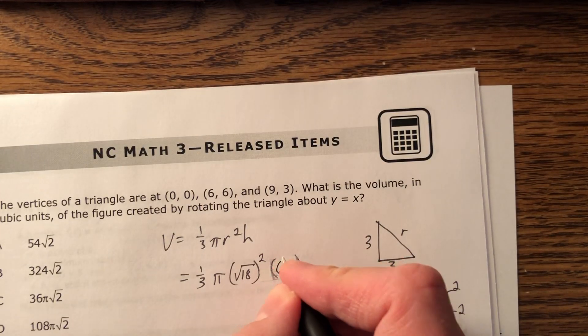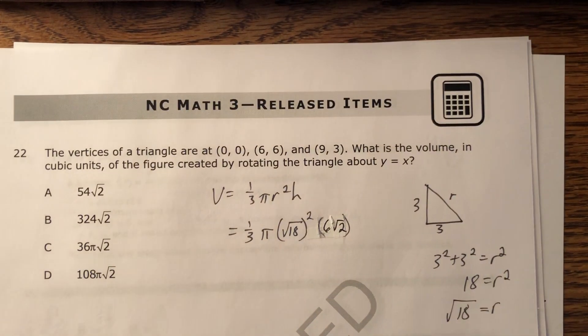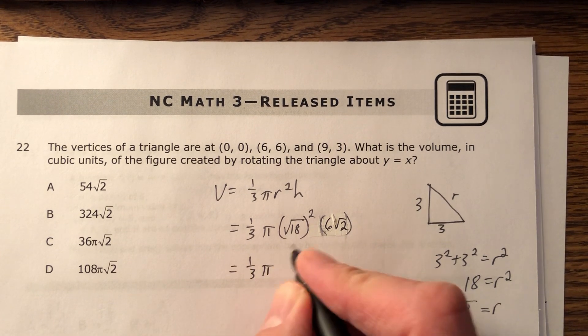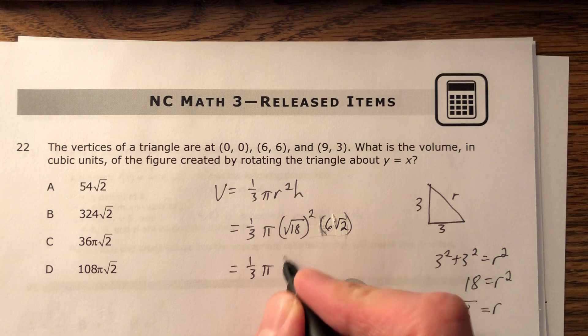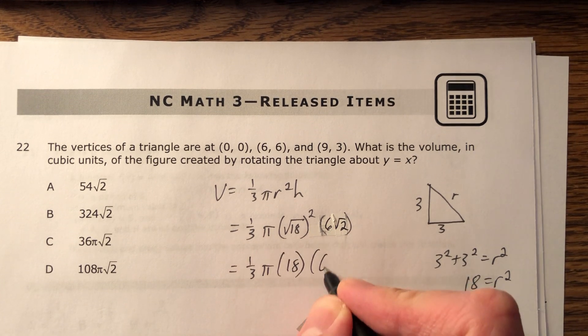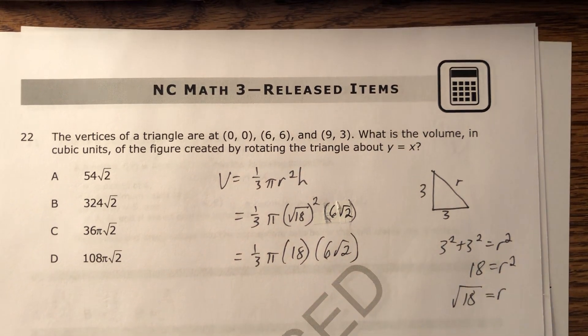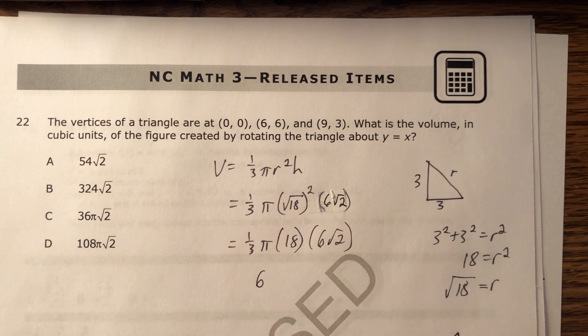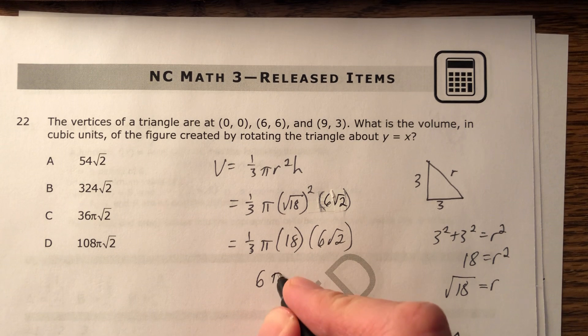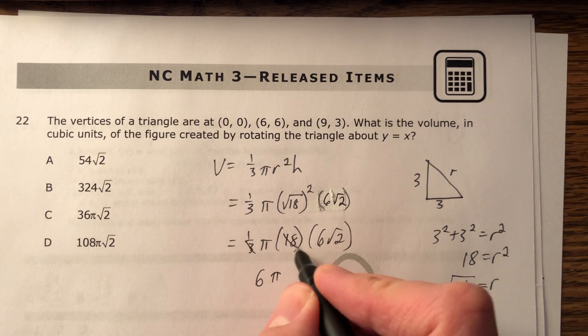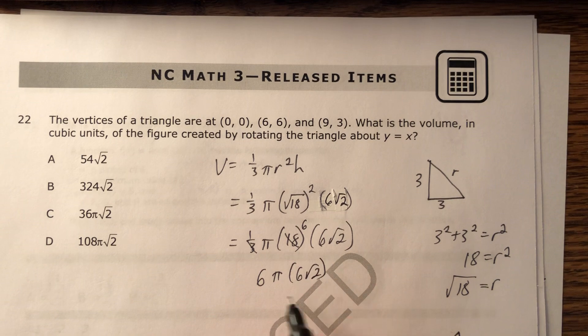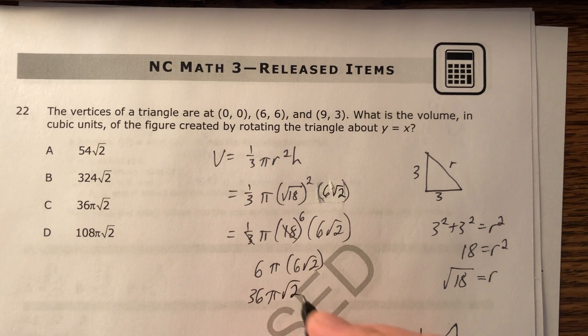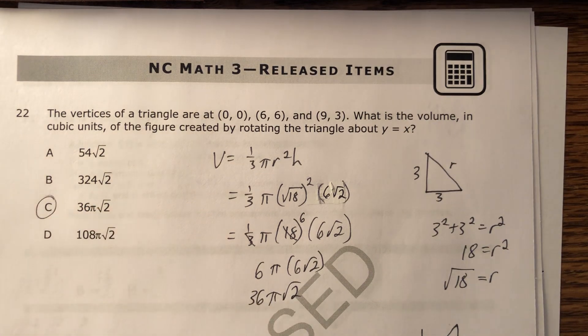All right. So 6√2 goes here. And we are actually ready to proceed with this problem. So I have 1/3 π times the square root of 18 squared. That would be 18 times 6√2. This cleans up so nicely. 1/3 of 18 is 6. And I have a π. I went ahead and divided that into that and got 6. And I have 6√2. And 6 times 6, we all know what that is. And there's a π. And there's a square root of 2. And that is the answer.